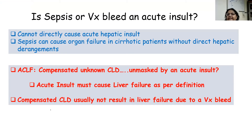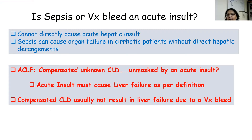We frequently ask whether sepsis or variceal bleed is an acute insult. Regarding sepsis: sepsis doesn't cause acute parenchymal insult, and can cause organ failure in cirrhotics without causing direct hepatic derangement. Hence sepsis may present in a cirrhotic without acute parenchymal insult and is not called an acute hepatic insult. Similarly, variceal bleed is usually not considered an acute insult because if it happens in decompensated CLD it may cause liver failure, but if it happens in compensated unknown CLD it may just unmask the CLD without causing liver failure. So variceal bleed is not a common acute precipitating event.